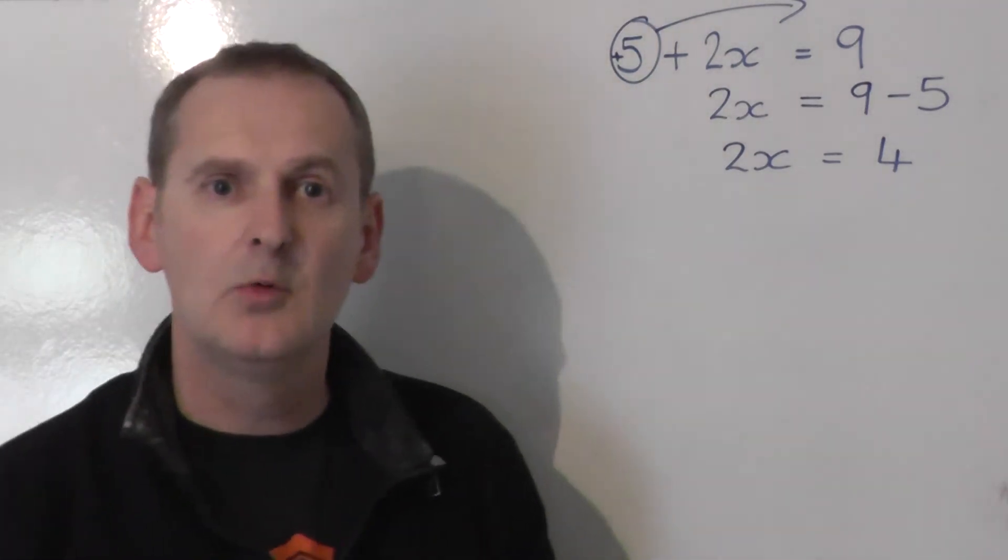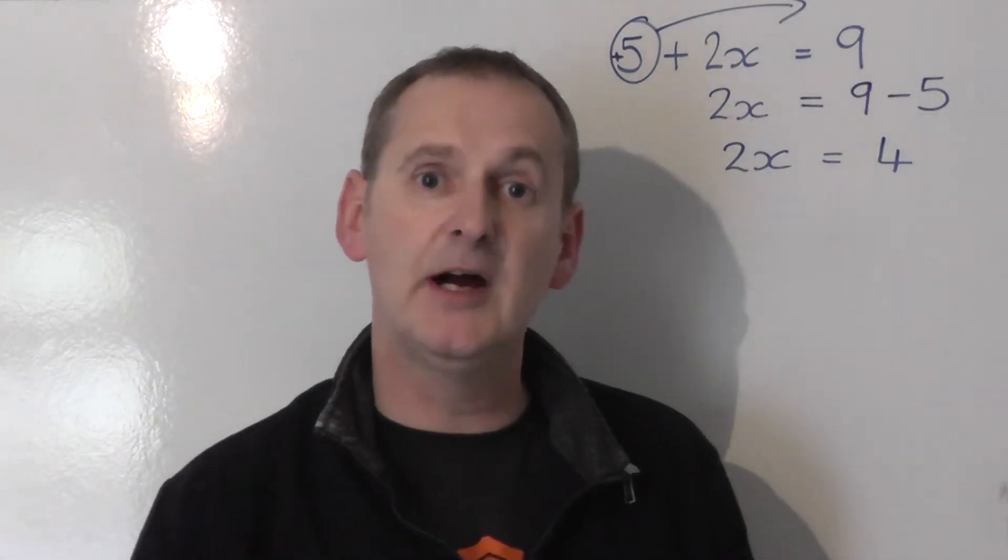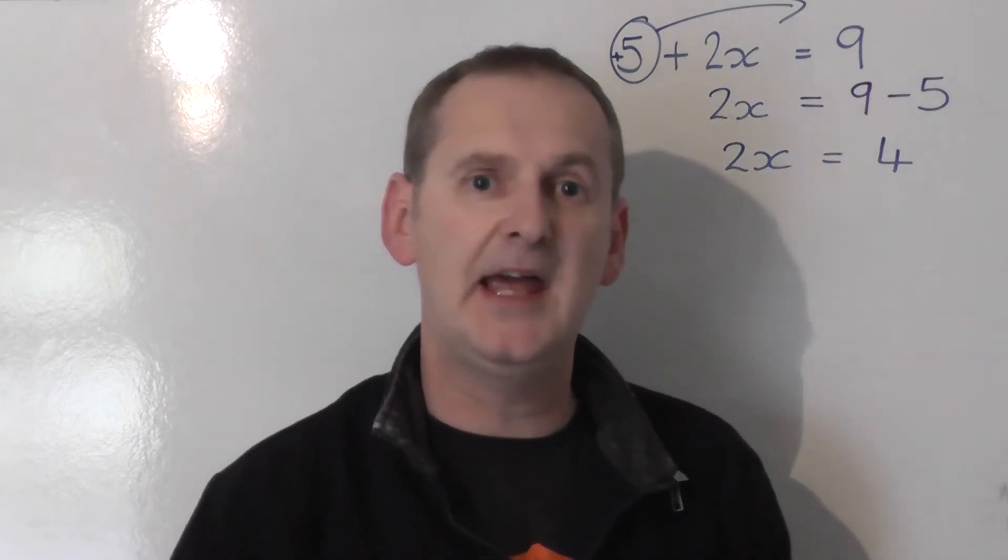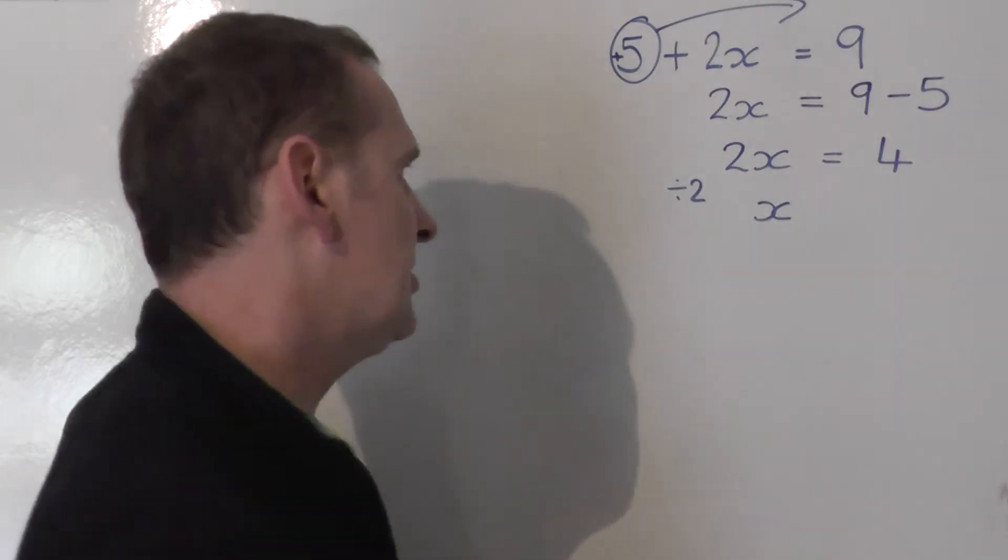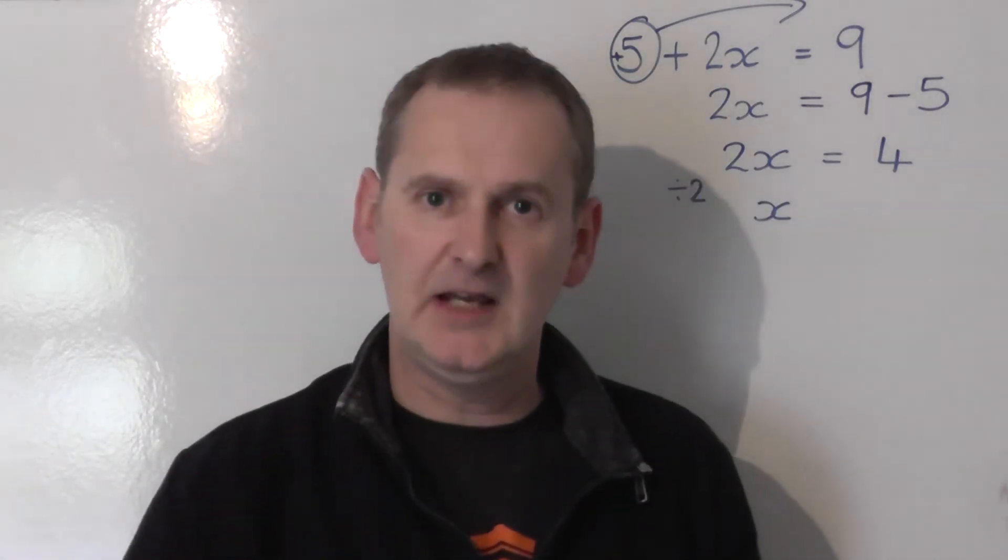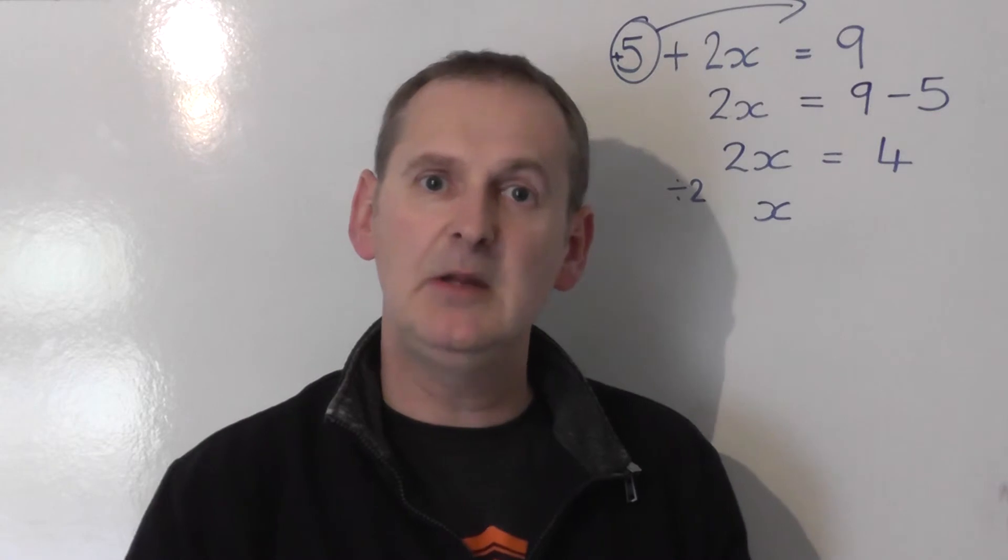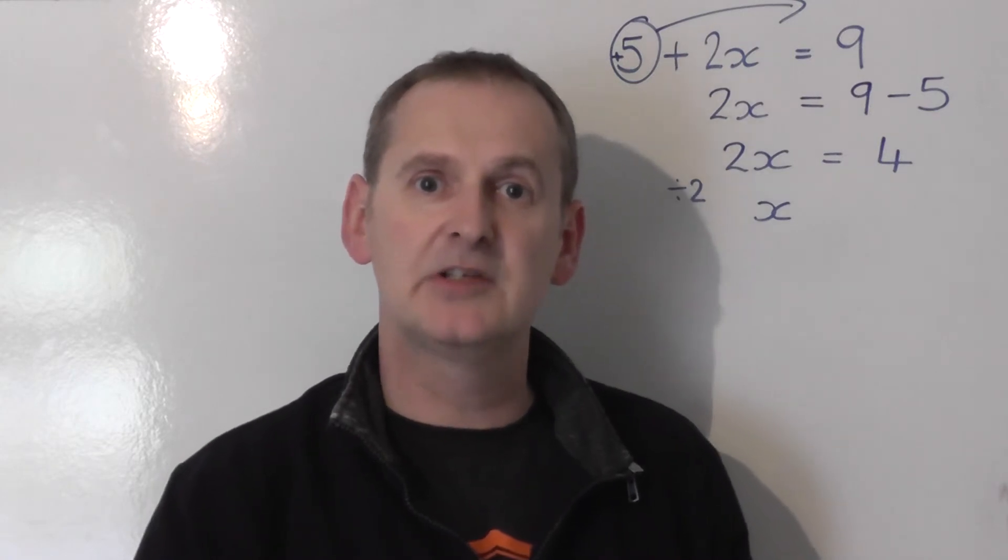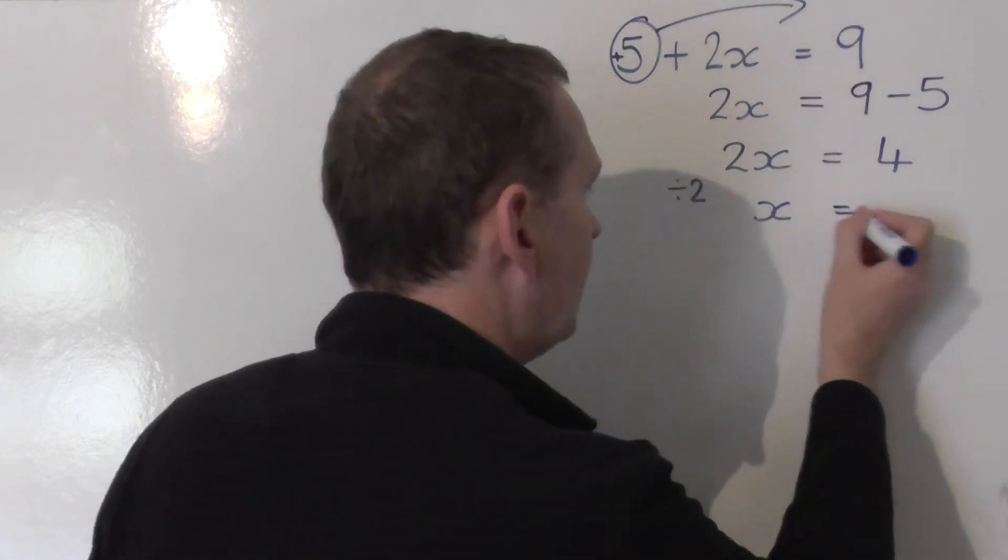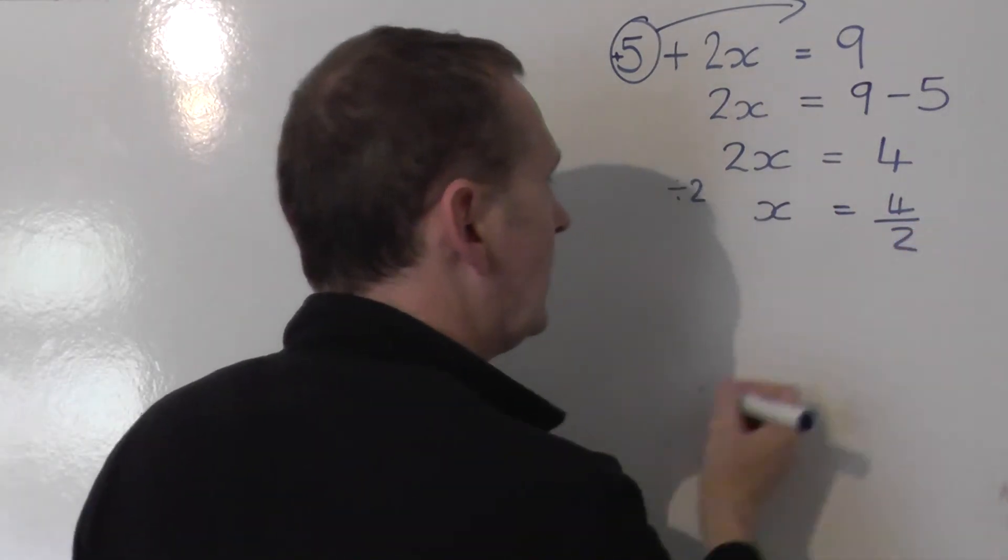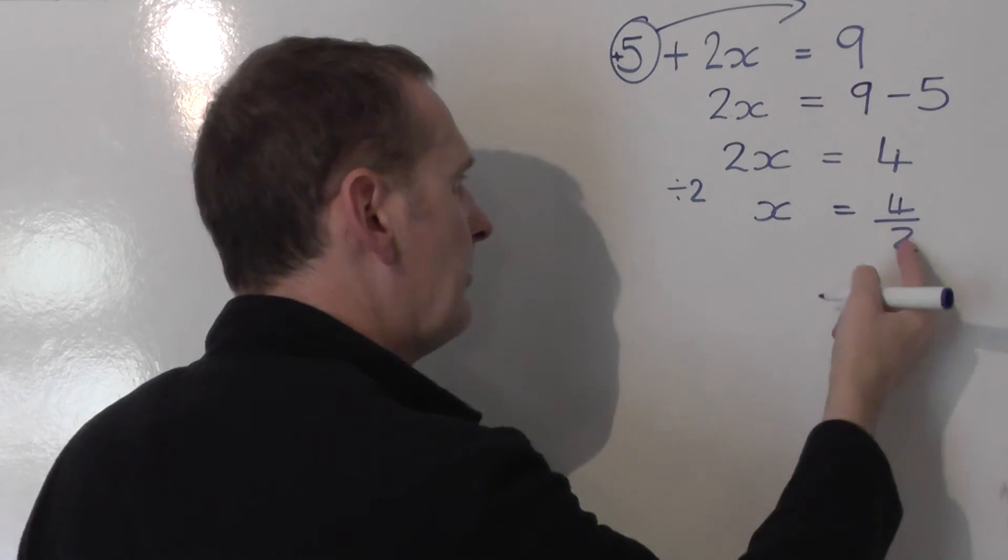We're nearly there. We now know that 2x is 4, but I don't want to know 2x. I want to know what x is. So I simply go from 2x to x by sharing by 2. If I share the left-hand side by 2, remember, keep the balance equal on both sides, we share the other side by 2 as well. So we take the 4 on the right-hand side and share that by 2.